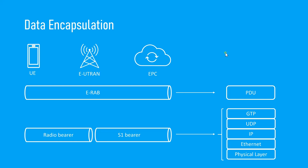Now let's look at the TCP/IP layer format. A TCP/IP layer format consists of the application layer at the top, then the transport layer, then the network layer, and finally the data link layer and the physical layer. The application layer contains pure data — that is called a Packet Data Unit (PDU).